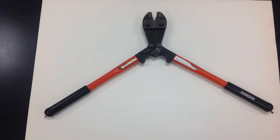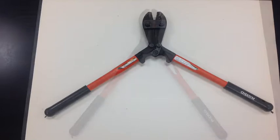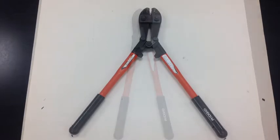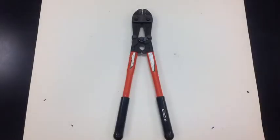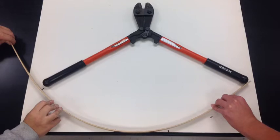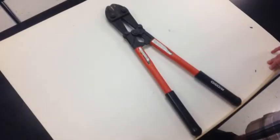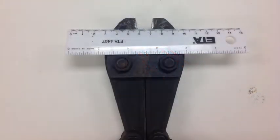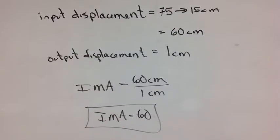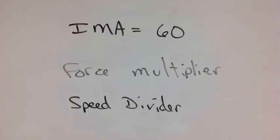Here are the bolt cutters at the widest position. Next we see them at an intermediate position, and last at their closed position. We can take a bendy ruler to measure the input displacement directly. By subtracting the minimum separation, we can get the input displacement. We'll use an output displacement of 1 cm at that position in the jaws. So for 60 cm input, we have a 1 cm output — that is an ideal mechanical advantage of 60.